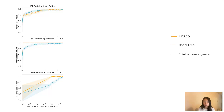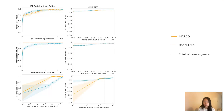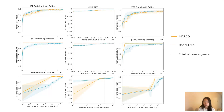Here we see the empirical results in the switch riddle without bridge task. In the first row, we observed that Marco achieves the same performance as the model-free baseline. However, if we look at the number of real environment samples consumed, rows 2 and 3 show that Marco is more sample-efficient by an order of magnitude. We can see that similar results are achieved for the other two communication tasks as well.